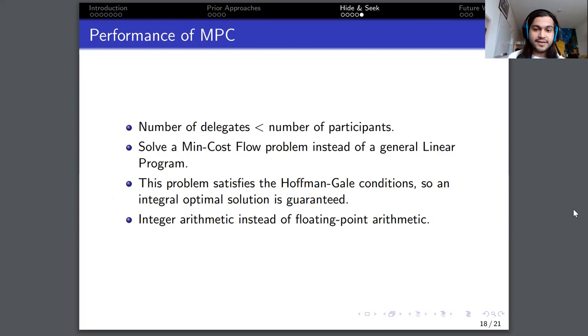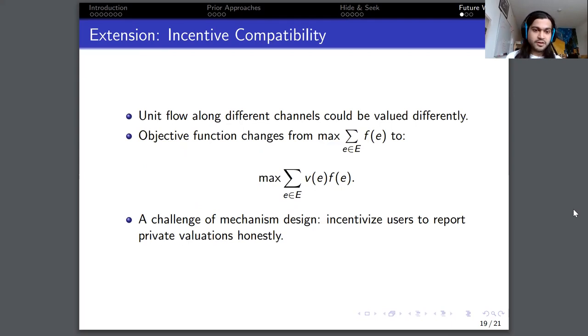That concludes the description of Hide and Seek, but I would like to add a few possible extensions to this work, the first one being that of incentive compatibility. And here the observation is that the same unit of flow would be valued differently across different channels. One simple example of it is that if one channel is of total capacity 100 units and the other one of 10, simply speaking, one unit of flow on the 10-unit channel would have a greater relative impact on how depleted it is, and therefore it could be valued more. The idea is instead of maximizing the total flow, we would want to maximize a weighted total flow. So the flow across an edge is actually multiplied by a certain valuation, which the users determine. But this extension is really a challenge of mechanism design, because we want to incentivize users to report their private valuations honestly. And we hope to do so by computing a price function, a price vector cleverly and charging users based on their valuations.